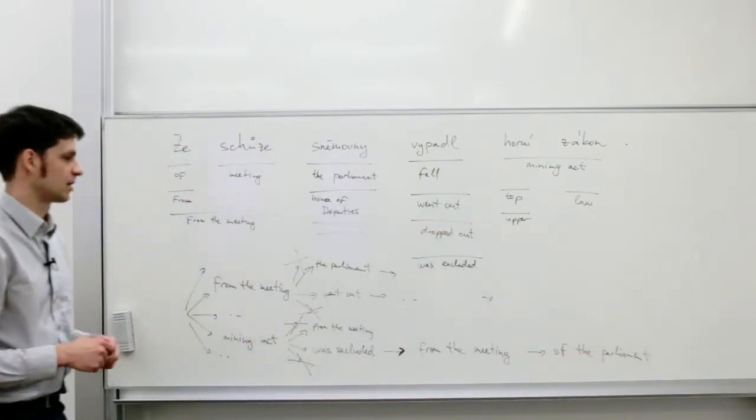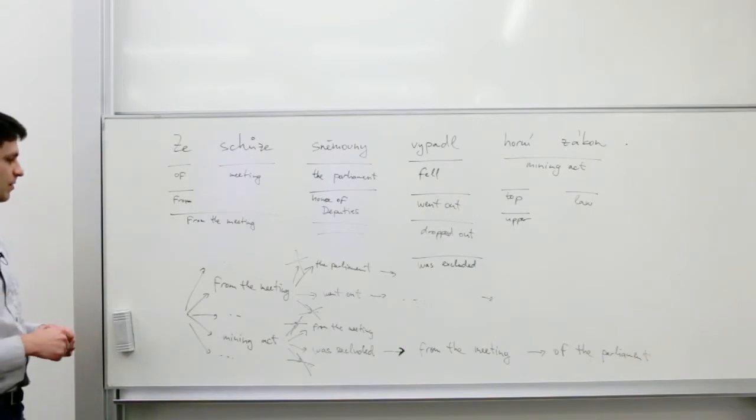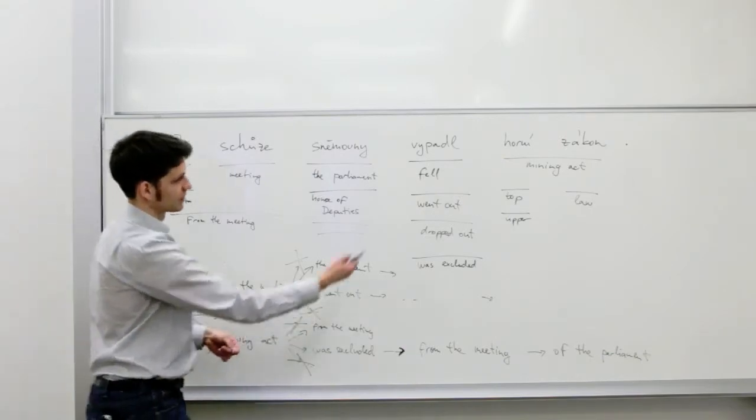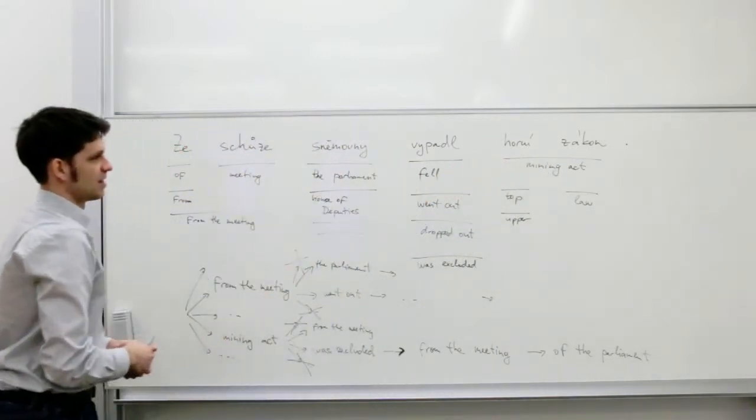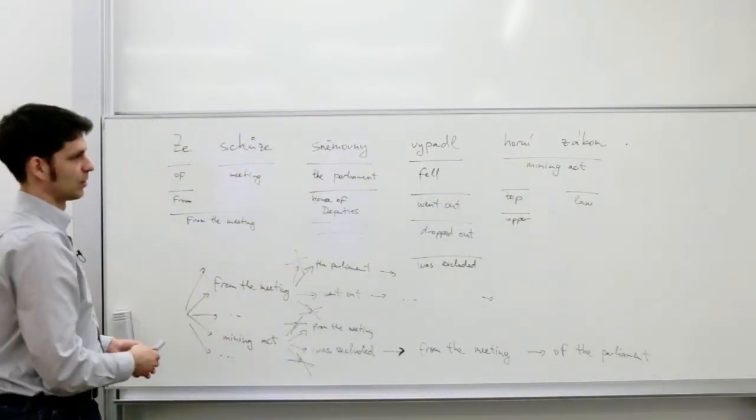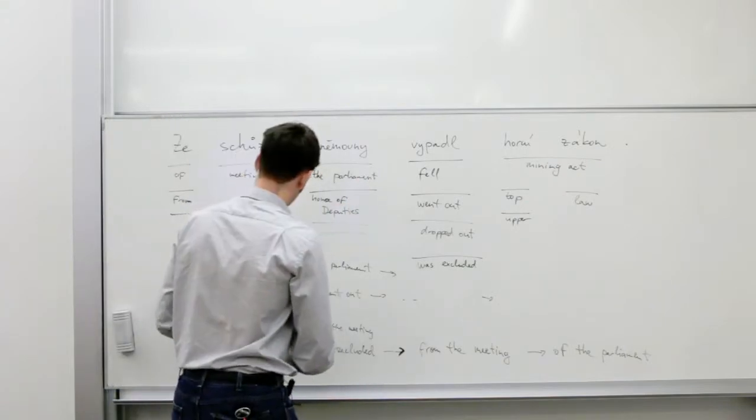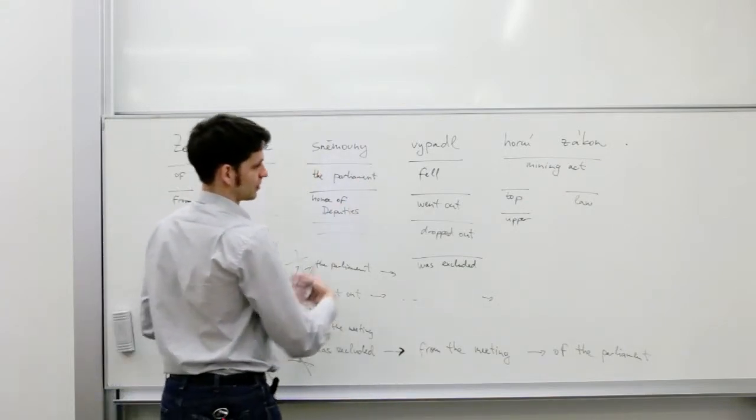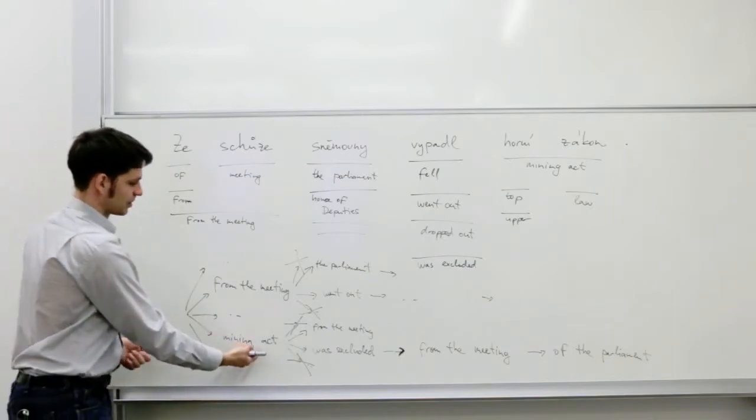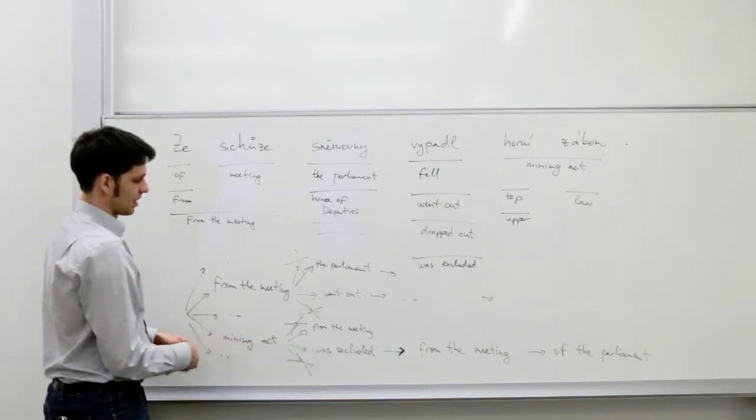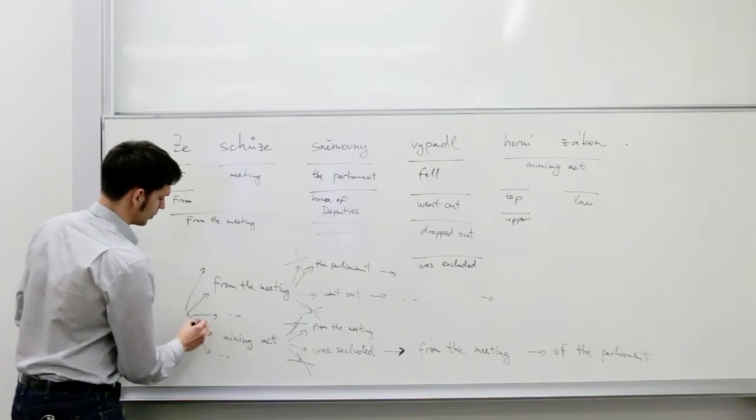But there are a number of things that can go wrong in this sentence. For example, the mining act is the translation of horní zákon words appearing at the very end of the sentence. And one of the components of the score, the reordering model, thinks that it's very costly to start translating with something from the very end of the sentence. So this translation can be seen as unlikely and it can be pruned away and not considered at all.